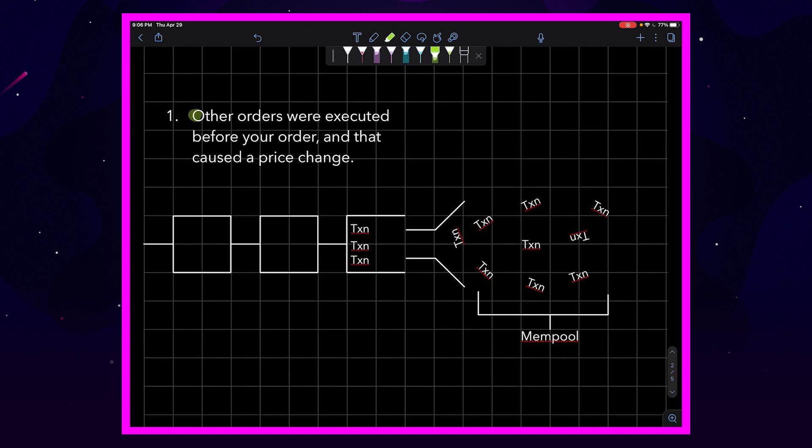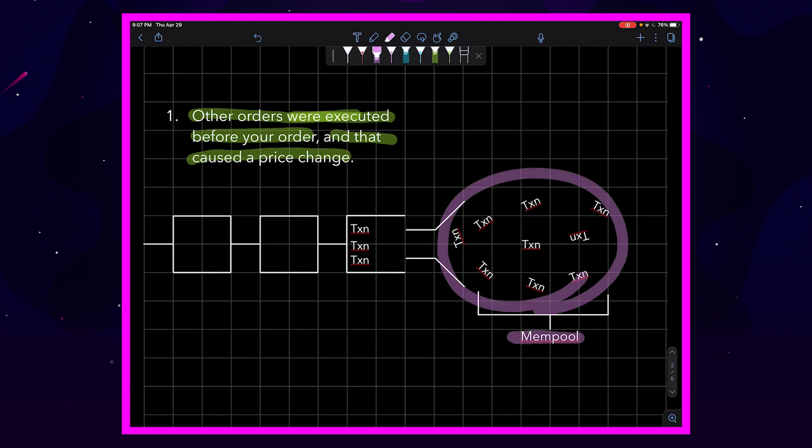The first one being that other orders were executed before your order, and that caused the price to change. Now the way that transactions work on the blockchain, when you initialize a transaction, it goes into something called a mempool, which is kind of like the lobby in which transactions hang out in before a validator node constructs and builds them into the next block in the blockchain.